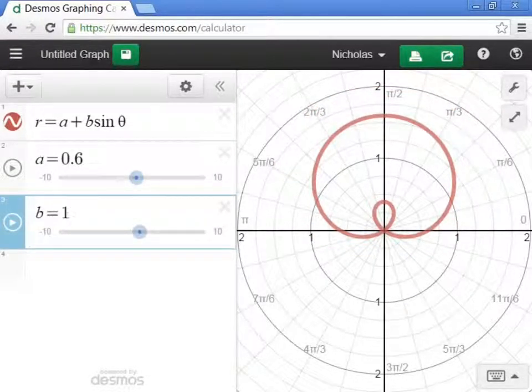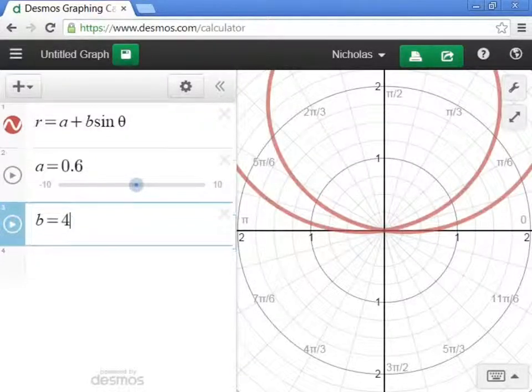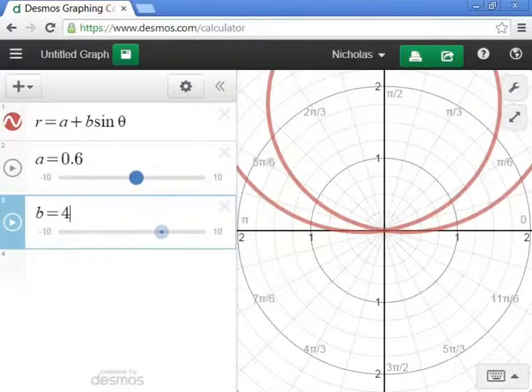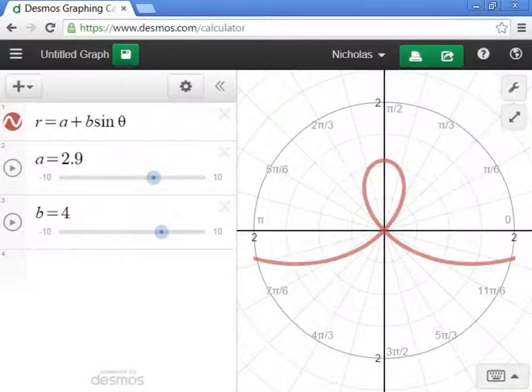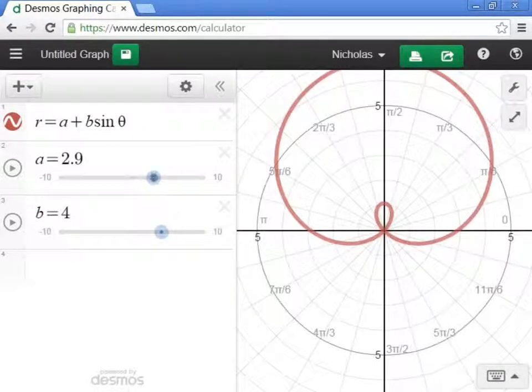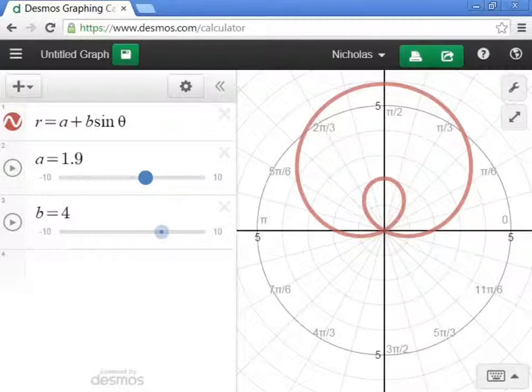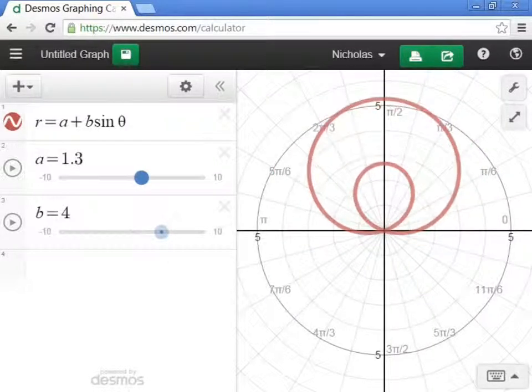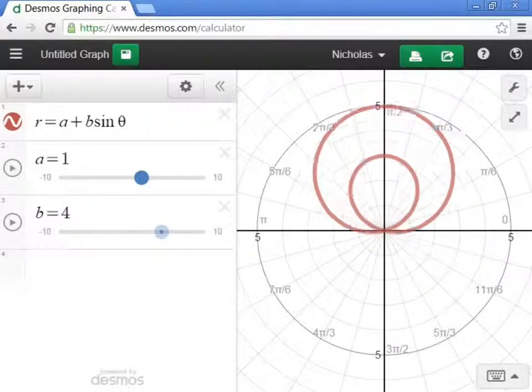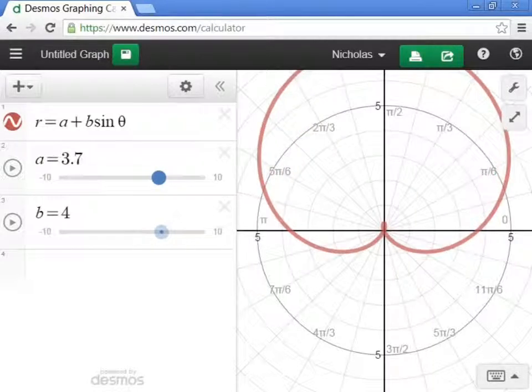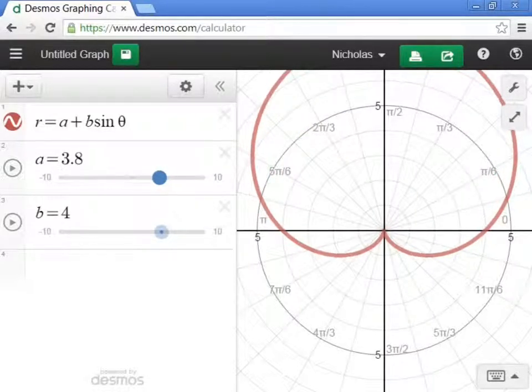If we, let's change this to a 4. Okay, wow, it's really big there. We can make our loop a little smaller. But now, A just has to be between 0 and 4 in order to have a loop. Once we hit 4, then we don't have a loop anymore.